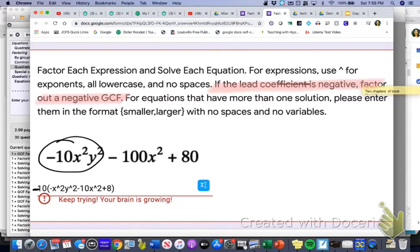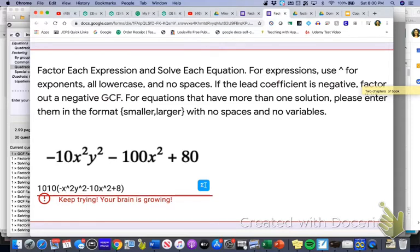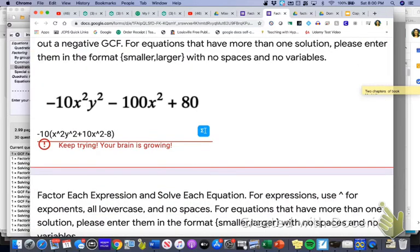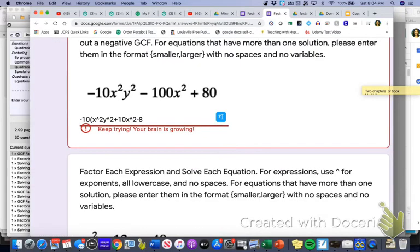So I'm going to change my answer just a little bit to reflect the fact that now I'm going to factor out a negative 10 instead of a positive 10. So that's going to flip the sign of everything here inside. And so then now when I go to the next problem in a second, you can see if I type it all in there correctly.